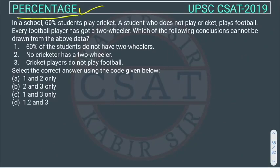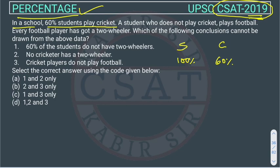This is a percentage question asked in the UPSC Civil Services Exam 2019. In a school, 60% of students play cricket. A student who does not play cricket plays football, so 40% play football. There may also be some players who play both cricket and football, but that is not given. Every football player has a two-wheeler.